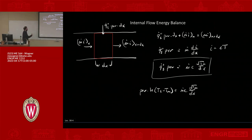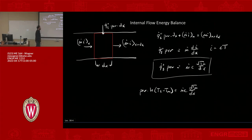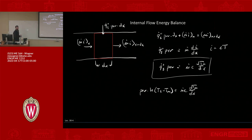In external flow, we go from the wall to T-infinity — that's always our driving temperature difference. Here in internal flow, we have to have some effective temperature that we're trying to transfer between, and that's Tm. Today we'll finish talking about internal flow and wrap this up, then go into heat exchangers, which is a direct follow-on from this topic.